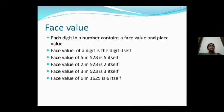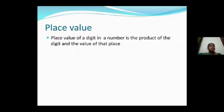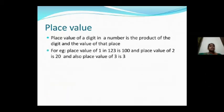Face value does not change. Place value of a digit in a number is the product of the digit and the value of that place. You see where the digit is placed, then multiply the digit by that place value. For example, in 123: 1 is in the hundreds place, 2 is in the tens place, 3 is in the ones place. So 1 into 100 is 100 — the place value of 1 in 123 is 100.